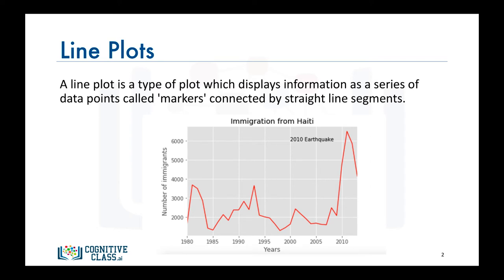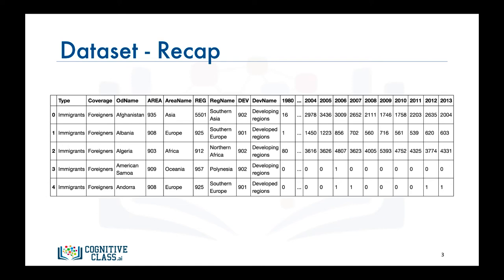Okay, now how can we generate this line plot? Before we go over the code to do that, let's do a quick recap of our data set. Each row represents a country and contains metadata about the country such as where it is located geographically and whether it is developing or developed. Each row also contains numerical figures of annual immigration from that country to Canada from 1980 to 2013.